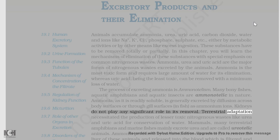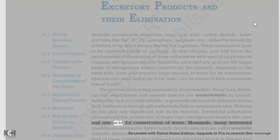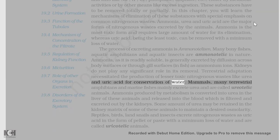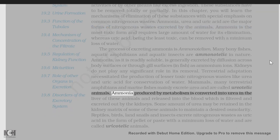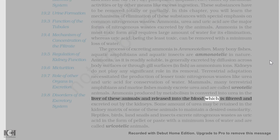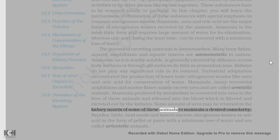Terrestrial adaptation necessitated the production of lesser toxic nitrogenous wastes like urea and uric acid for conservation of water. Mammals, many terrestrial amphibians and marine fishes mainly excrete urea and are called ureotelic animals. Ammonia produced by metabolism is converted into urea in the liver of these animals and released into the blood, which is filtered and excreted out by the kidneys. Some amount of urea may be retained in the kidney matrix of some of these animals to maintain a desired osmolarity.